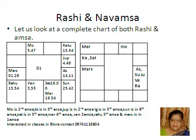If the planet is sitting in Leo, Aries, and Sagittarius, I will start counting from Aries. If the planet is sitting in Gemini, Libra, and Aquarius, I will count from Libra. If the planet is sitting in Cancer, Scorpio, and Pisces, I will count from Cancer. If the planet is sitting in Taurus, Virgo, and Capricorn, I will count from Capricorn.